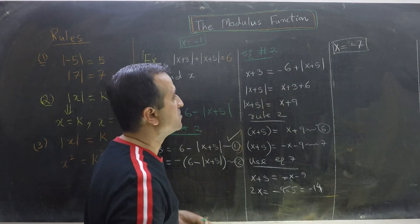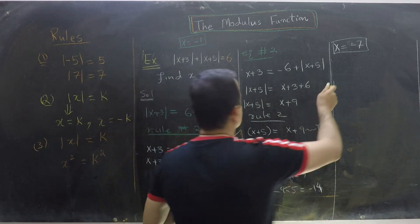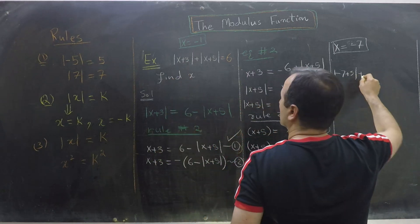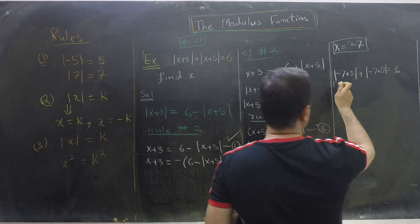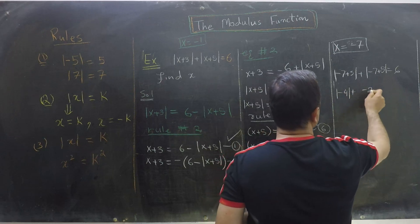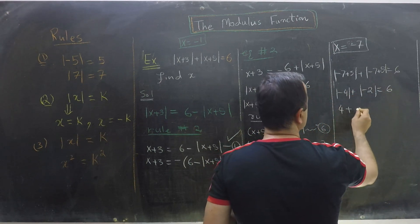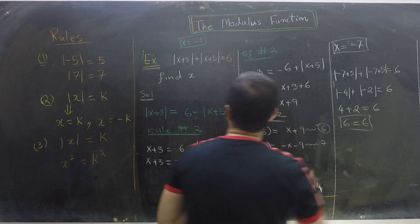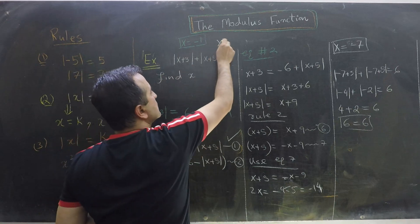Now we check if x equals minus 7 is valid. Substituting: mod of minus 7 plus 3, plus mod of minus 7 plus 5, equals mod of minus 4 plus mod of minus 2, which equals 4 plus 2, equals 6. Yes, the left hand side equals the right hand side. So the two solutions are x equals minus 1 and x equals minus 7.